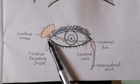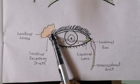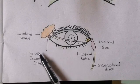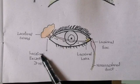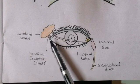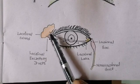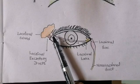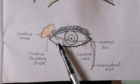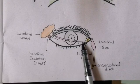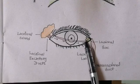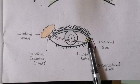The lacrimal gland releases its secretion into ducts called the lacrimal excretory ducts. From the lacrimal excretory ducts, the fluid produced from the lacrimal gland is passed to the lacrimal lake, which is present on the medial canthus of the eye.